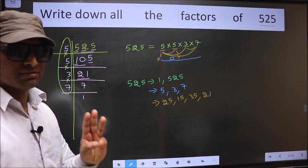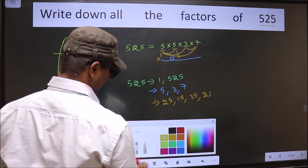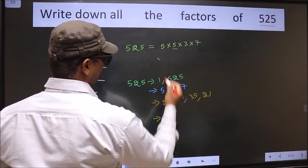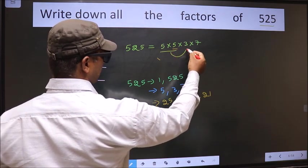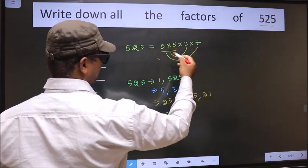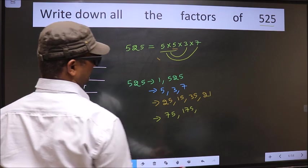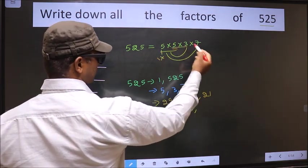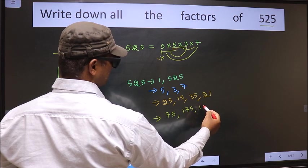Now you take the combination of 3 numbers. First I fix these 2 numbers: 5 into 5 is 25. Combine with 3: 25 into 3 is 75. Now combine with 7. Then fix 5 into 3, which is 15, and combine with 7: we get 15 into 7 is 105. No other combinations are possible.